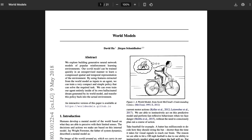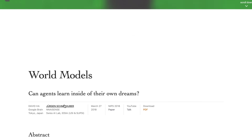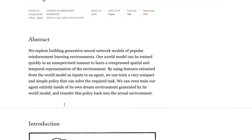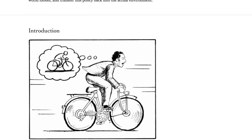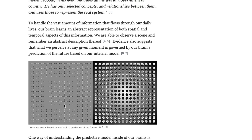The concept originated in a 2018 paper by David Ha and Juergen Schmidhuber, which introduced a framework with three key components: a vision model to compress high-dimensional sensory input into compact latent representations, a memory model to predict future latent states based on past information, and a controller model to decide actions using these representations. In their experiments, this architecture was applied to a car racing simulation where the agent learned to navigate tracks by hallucinating and planning within its internal model.